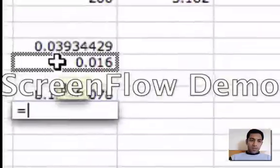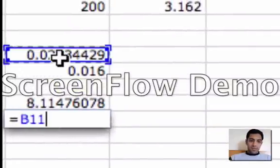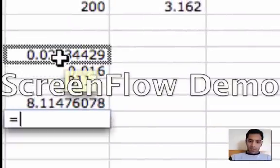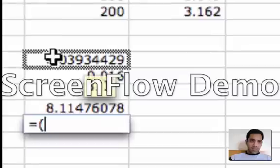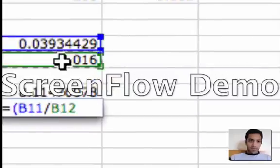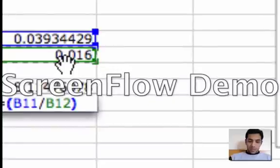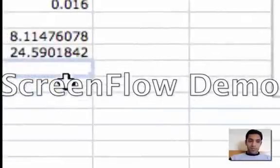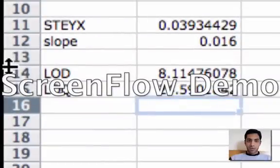And limit of quantitation can be calculated using the value of STEYX, that's the standard error, over slope times 10. Now this is your limit of quantitation.